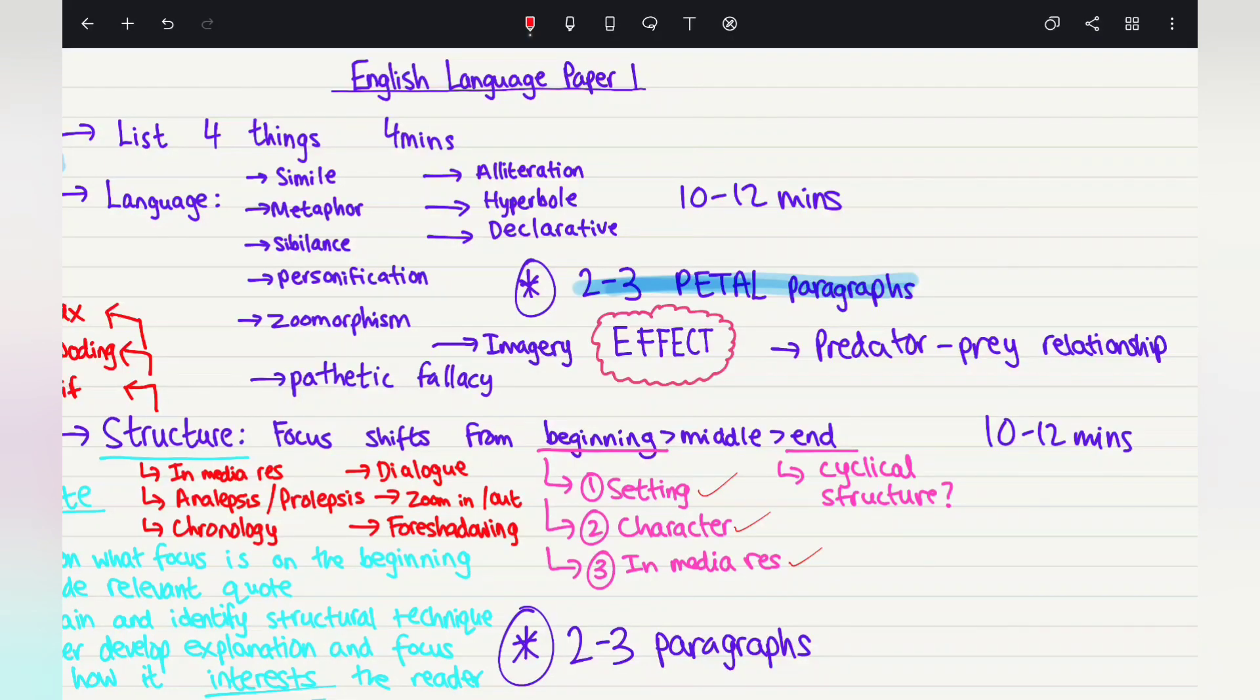And one advice I would give you is that sometimes, if you are running out of ideas, then you may want to look at imagery. You might come across a quote and you're like, oh no, I don't know what this is. You're struggling to find the technique or the word class or the sentence forms. You can identify it as imagery. So obviously you need to make sure if it's visual imagery or auditory imagery and you want to tell us how it affects the reader. So this is a top tip for you to remember for question two language analysis.